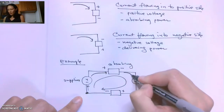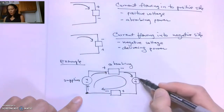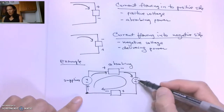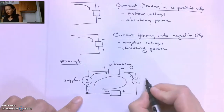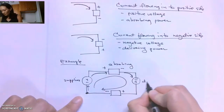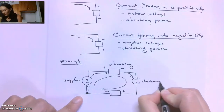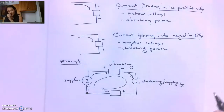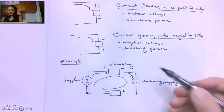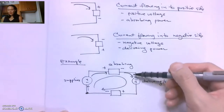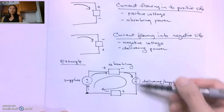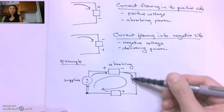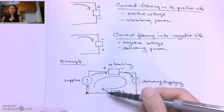Continuing around our loop, we enter into this voltage source through the negative terminal, and this is going to be delivering power. One thing I like to think of is: since we come in the negative side and go over to the positive, this is kind of like boosting the current around this loop.